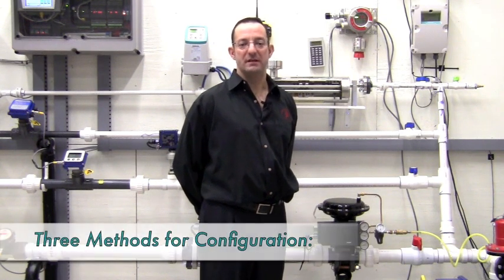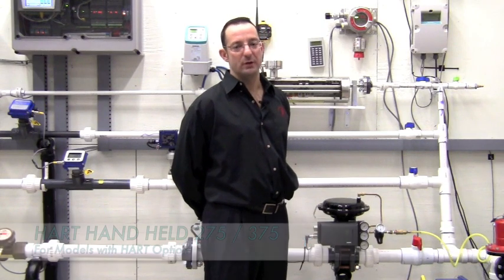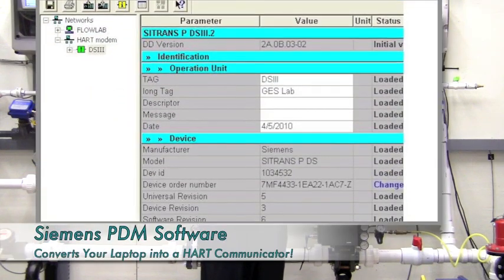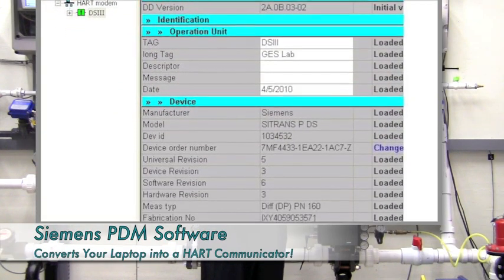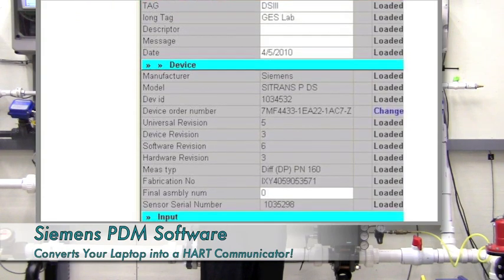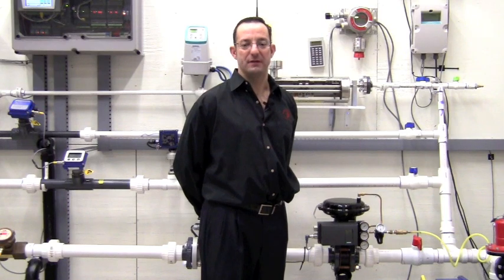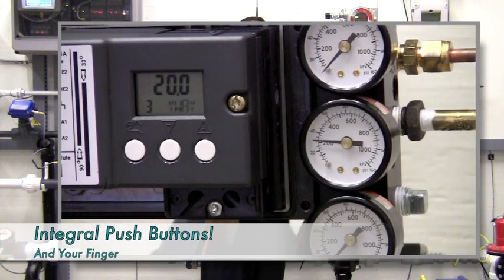The PS2 can be configured in at least three different ways. You can configure the unit with a HART handheld communicator. You can also use our PDM software package, which lets your laptop configure any HART protocol device on the market for under $500. But the simplest way to configure the PS2 is with the push buttons on the front of the unit and your two fingers.